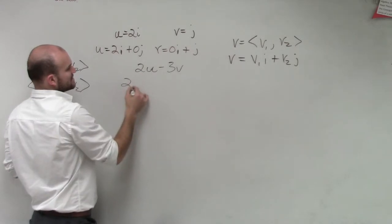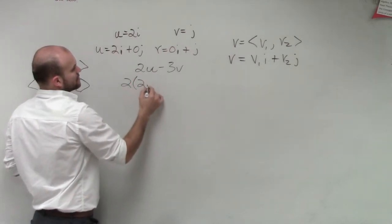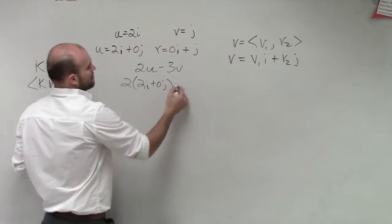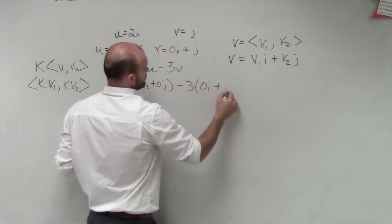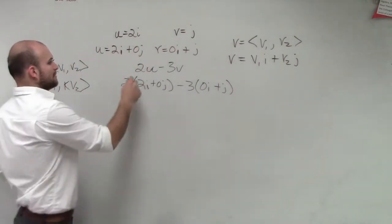So if I'm going to do 2 times this, I'm going to do 2 times 2i plus 0j minus 3 times 0i plus j. Just here at a property.